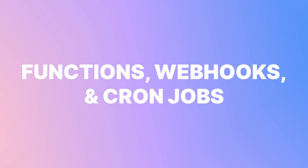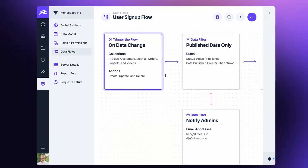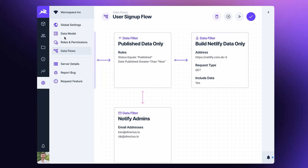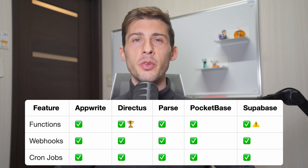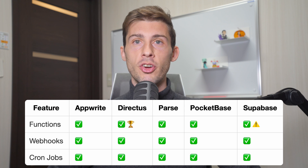Functions, Webhooks, and Cronjobs. Sometimes you will need to go beyond basic CRUD operations and add custom logic to your app — for example, sending an email after a purchase, processing payments to give access to a premium feature, or sending a push notification every day at a specific time. That's where functions, webhooks, and cronjobs come in handy. They all support these, but in very different ways.